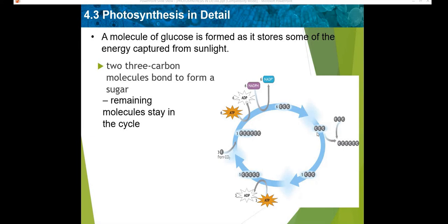One interesting fact about the Calvin cycle: rubisco is an enzyme that sets up the Calvin cycle and is thought to be the most abundant protein on Earth. It has been estimated that there are pounds of rubisco for every human on Earth. However, rubisco is very slow and inefficient — it catalyzes between 2 and 8 molecules of carbon dioxide per second, compared to thousands per second for most enzymes.